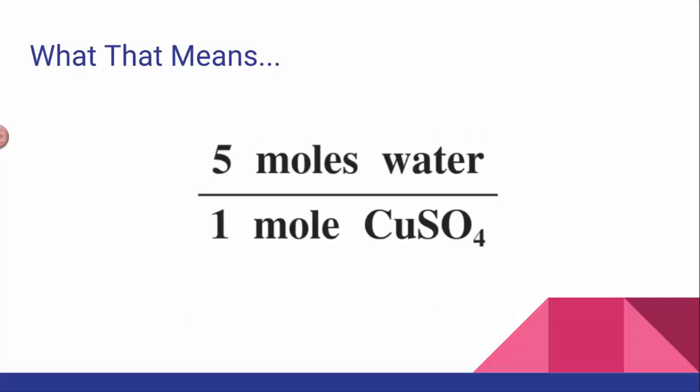What that means is that we have a nice little conversion factor here. There are 5 moles of water for every 1 mole of CuSO4. And since we know how to use moles and mass, this makes for really easy analysis of the hydrate. If I wanted to find out how much water was trapped in a hydrate, I could analyze it and come up with this ratio — moles of water to 1 mole of anhydrate. Whatever that moles of water is, that's the number that goes after the dot.